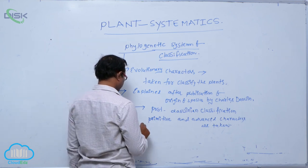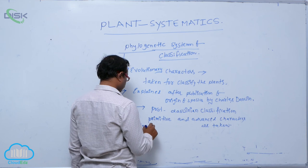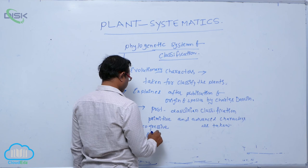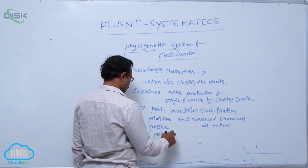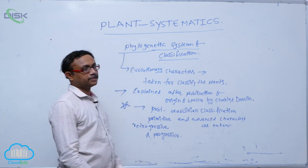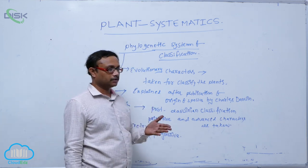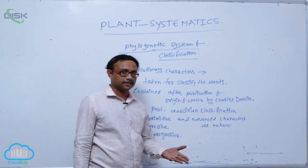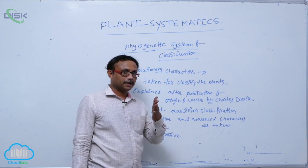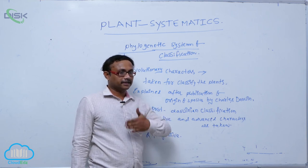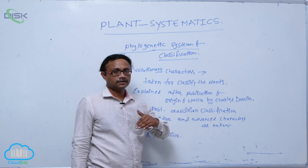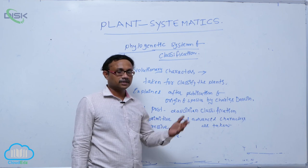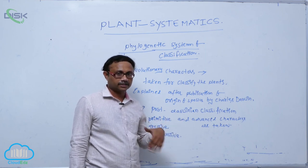Either it is retrogressive or progressive. Progressive means simple to complex — simple organisms are converted into complex ones through evolution. Retrogressive means complex organisms are modified and converted to simple ones.